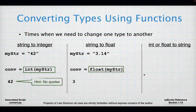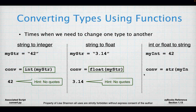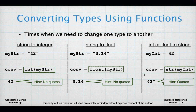Similarly with float: instead of 'int' as the function name, use 'float.' It takes one argument and will convert a string containing a floating point number into a true float so I can do math with it. I can also change integers and floats back to strings — this is important because if you're giving information back to the user, it has to be in string form.